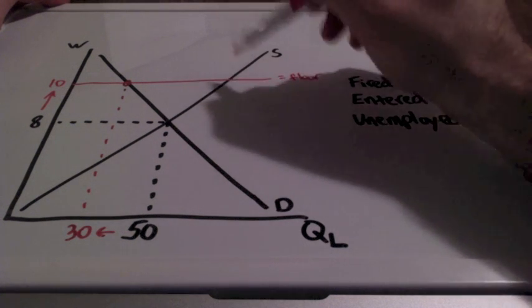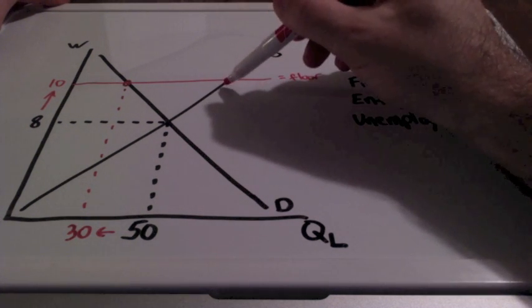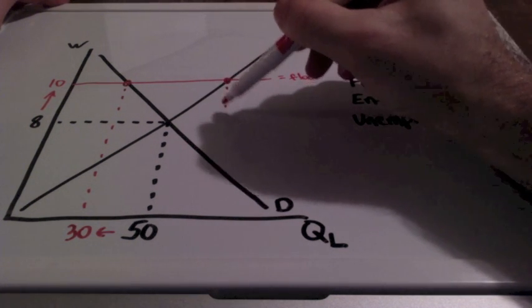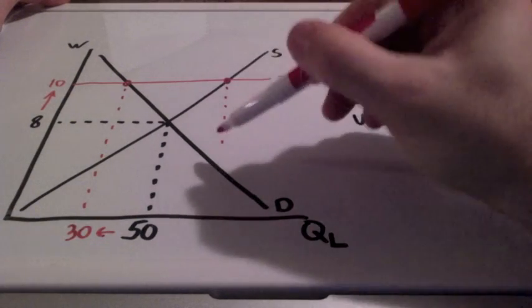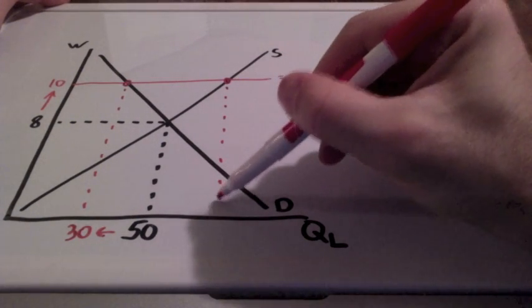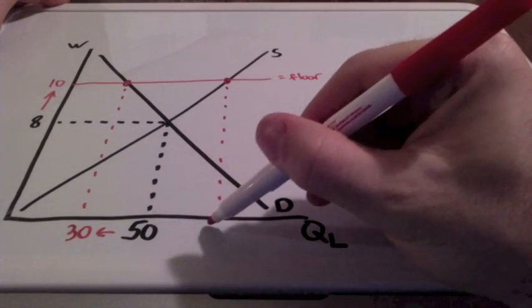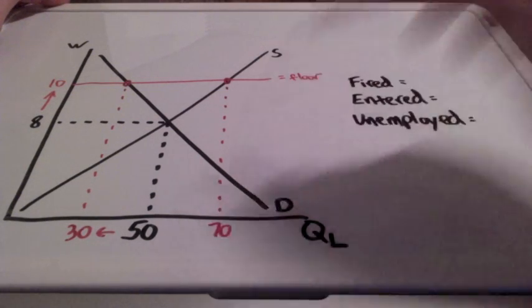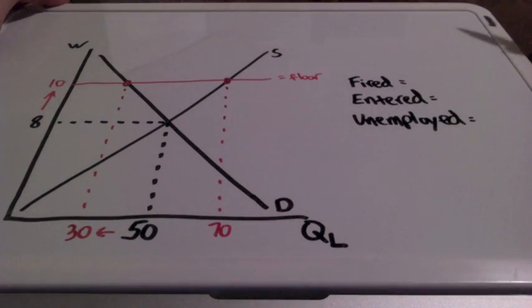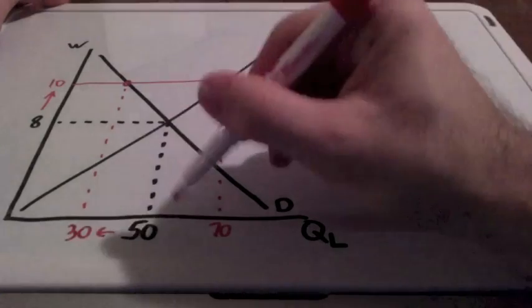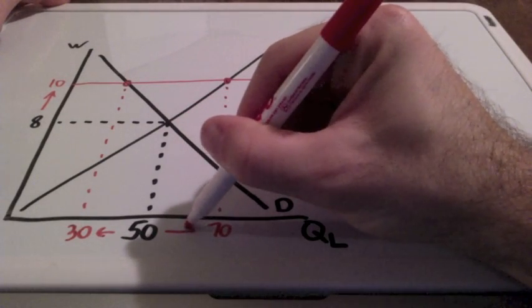The quantity supplied of labor will increase because it will motivate more people to enter the market with the hopes of getting this higher wage. So let's say it goes from 50 to 70.